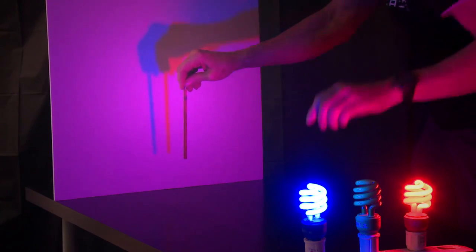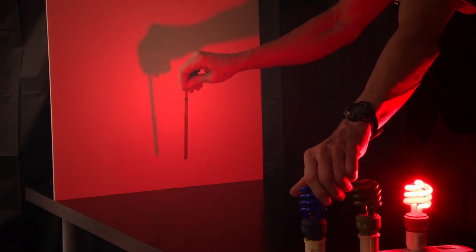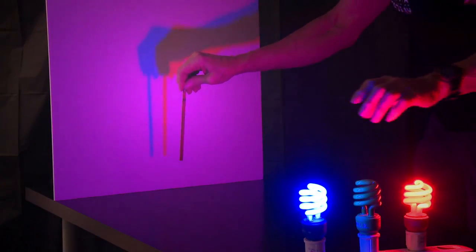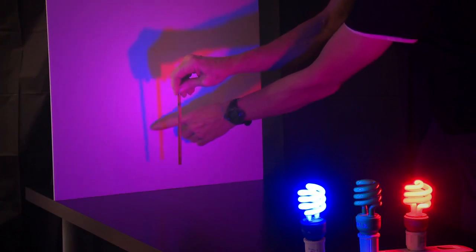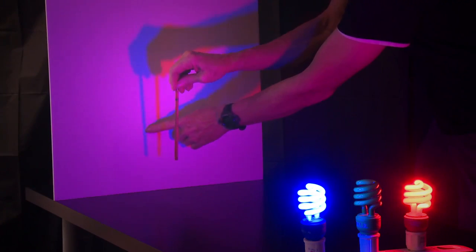And over here, this is the shadow from the blue light. The blue light is in a different position, so it fills in the shadow from the red light.